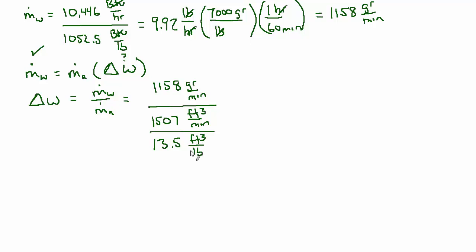And if it turns out that we were way off in this assumption based on what we ultimately find out about the condition of that supply air, then we should go back and iterate on this and use the real specific volume, and you may have to do it a couple times until it starts to converge. But we can be relatively confident that it's not going to be too far away from 13 and a half.